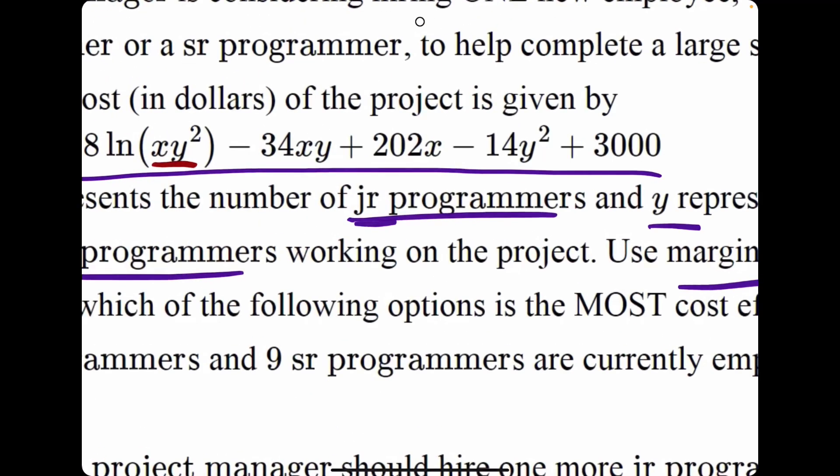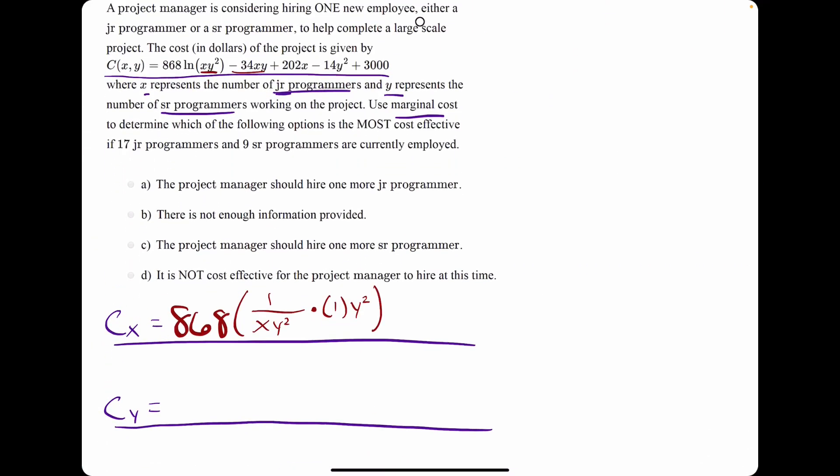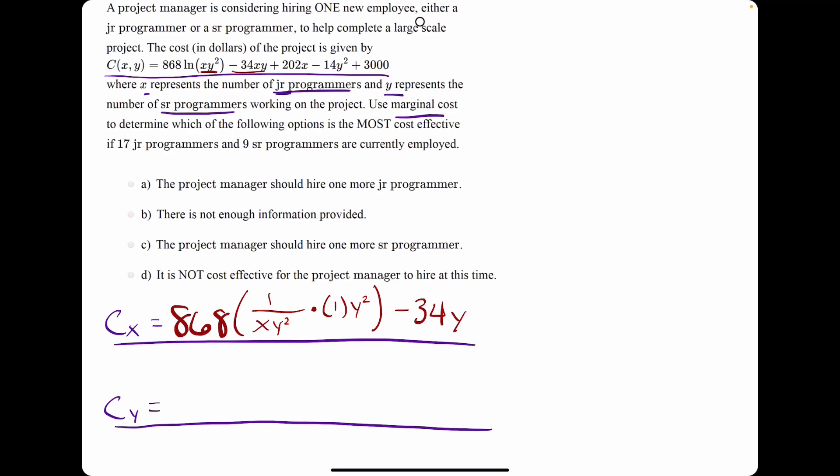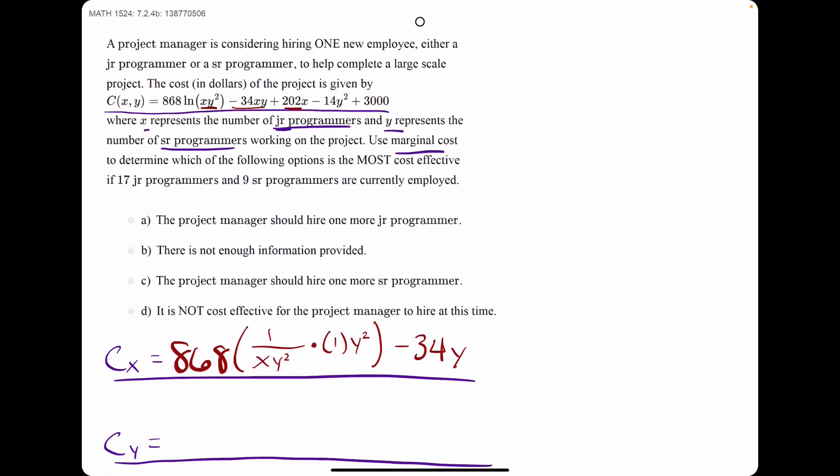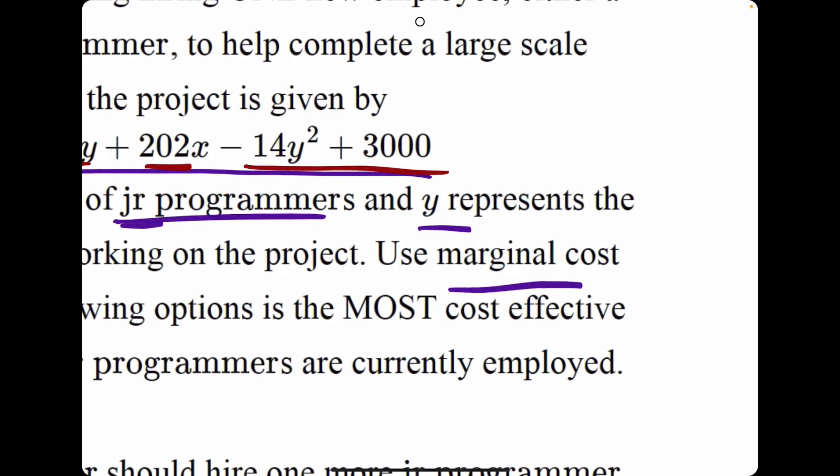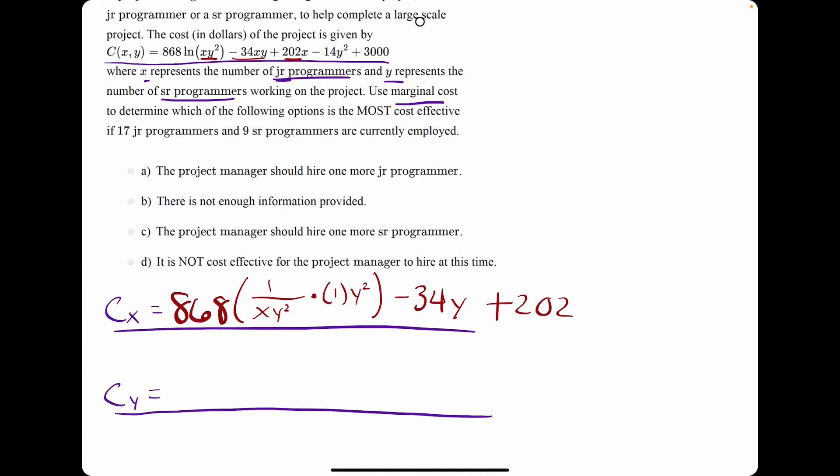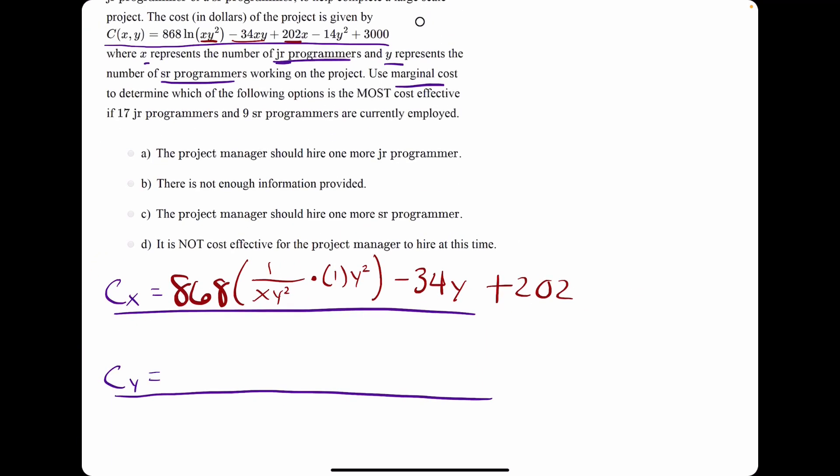We move on to minus 34xy. Minus 34x has a derivative of minus 34, and then because that y was tacked on to the x term, and we're treating y as a constant when we find the derivative with respect to x, it'll be carried along for the ride. Then we move on to plus 202x, which has a derivative of plus 202. The remaining terms don't have x in them, so we are treating all of them as constants, which have a derivative of 0. Then we are done for Cx.